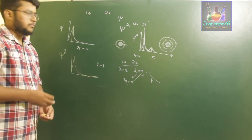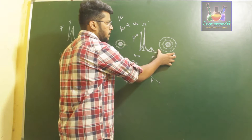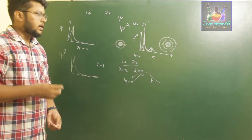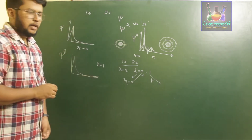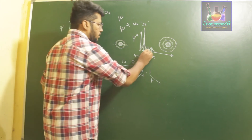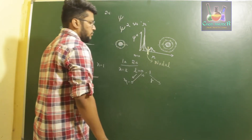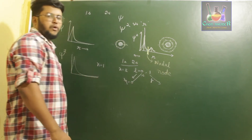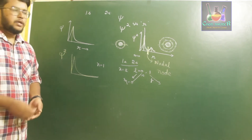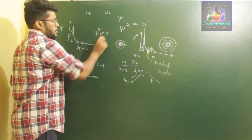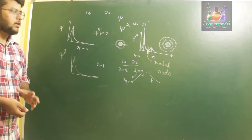In the probability graph, there is a point where the probability of finding the electron reaches zero — this is called a nodal point or node. A node is defined as the position at which the probability of finding an electron is zero, meaning psi-square equals zero at that point of R.